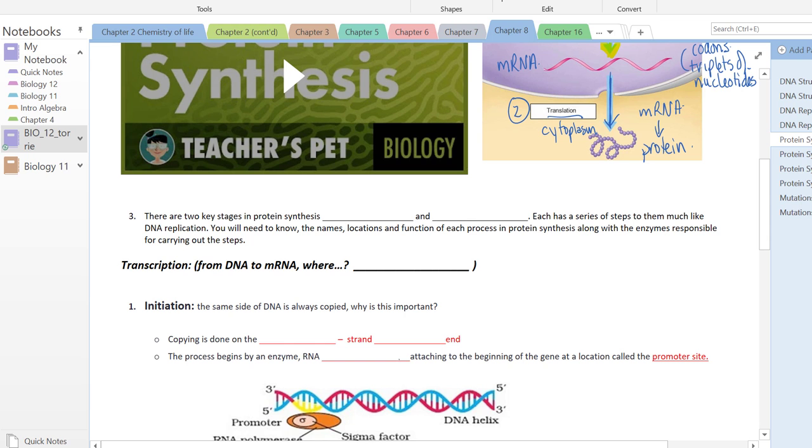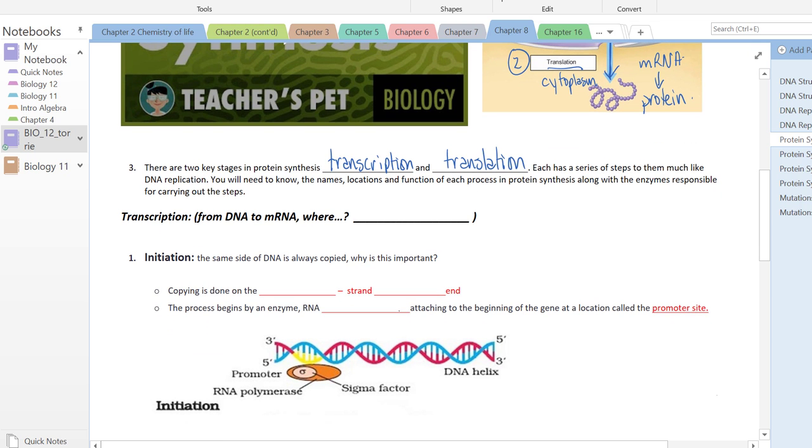Two key stages in protein synthesis: first transcription, and second translation. Each has a series of steps to them, not unlike DNA replication. We have three steps to transcription and three steps to translation. You'll need to know the names of the steps, the location where they're occurring, and the function of each along with the enzymes responsible.